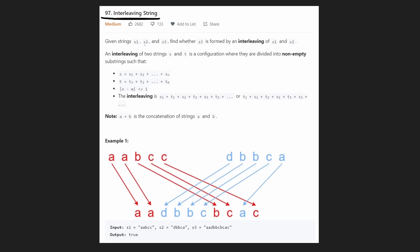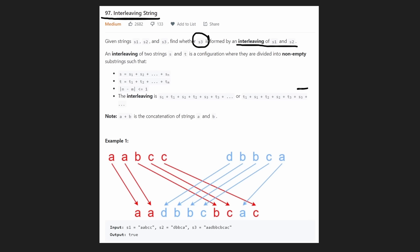In this problem we're given three strings: s1, s2, and s3, and we just want to know a simple question: can we form the string s3 by interleaving the strings s1 and s2? An interleaving string is basically when you take two strings, split them up into substrings, and then add them together.